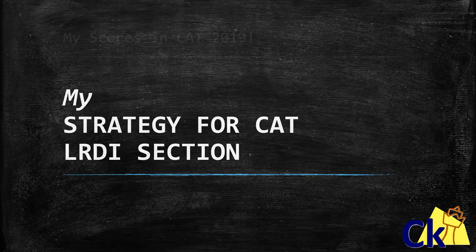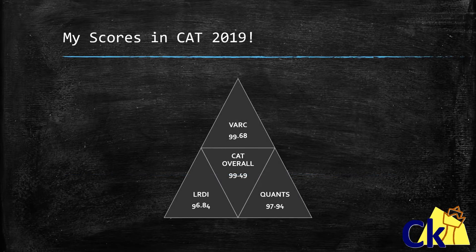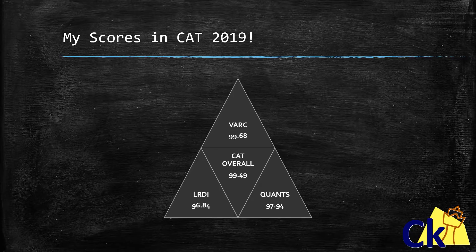Moving forward, here are my scores in the CAT 2019 paper. As we can see, in the LRDI section my scores were moderate, and the reason being I made a wrong choice of deciding to solve a set which I could not, and that eventually wasted 5 to 6 minutes of my paper. So that is why the score in LRDI is where it is.